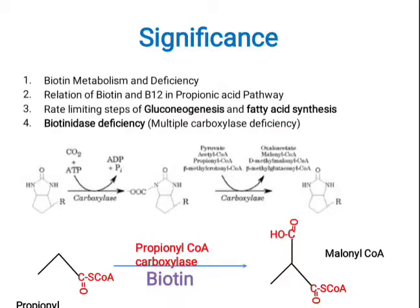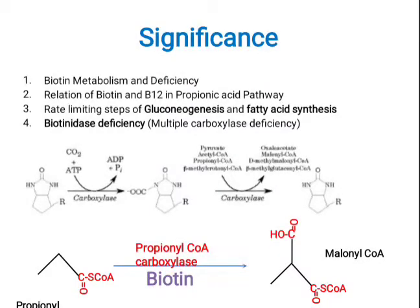I conceptualize all biotin-dependent enzymes as 'ABC enzymes': A for ATP, because they all utilize ATP; B for biotin; and C for carboxylase. So these enzymes utilize ATP and biotin to carboxylate the substrate.